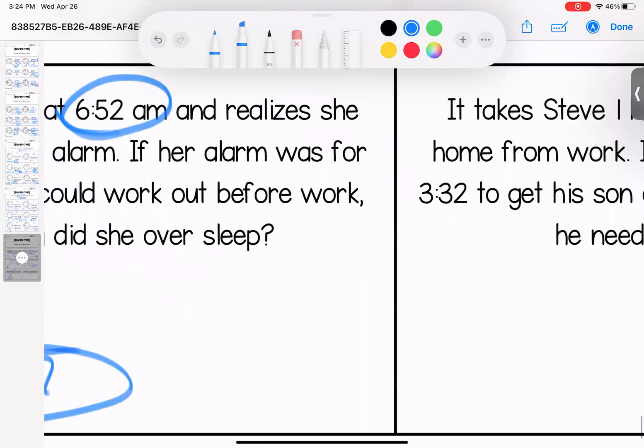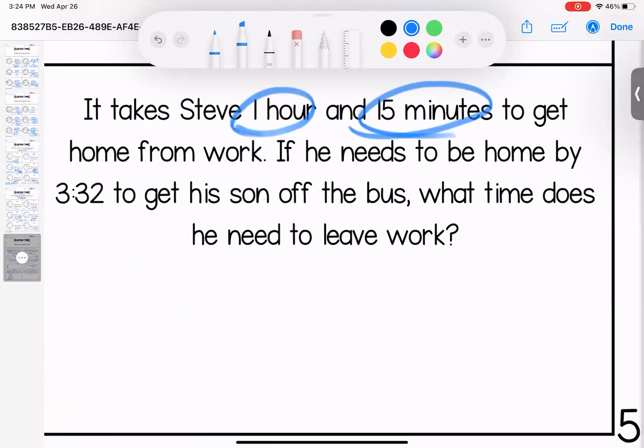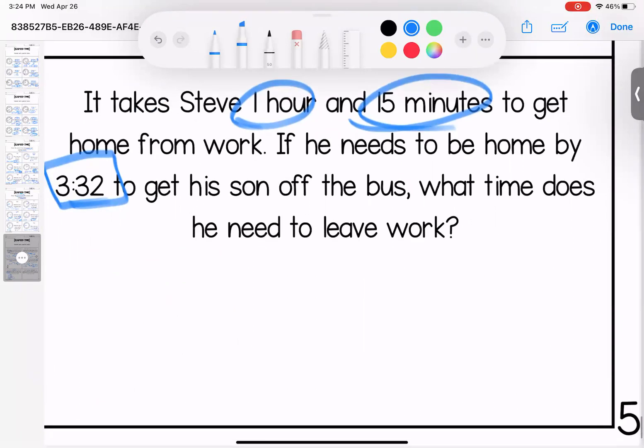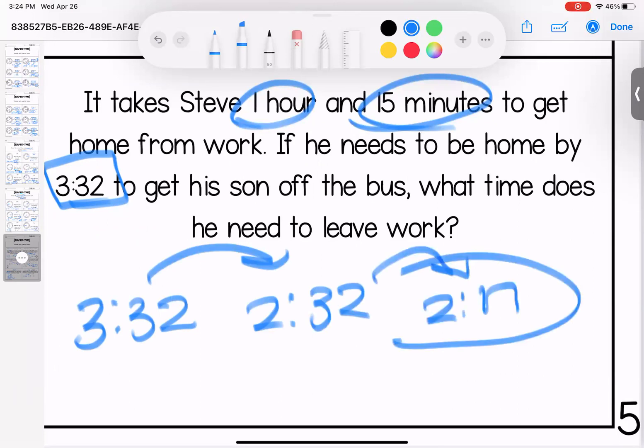Last one. It takes Steve one hour and 15 minutes to get home from work. If he needs to be home by 3:32 to get his son off the bus, what time does he need to leave work? So if he starts at 3:32 and we work backwards one hour and 15 minutes, 2:32. 15 minutes would be 2:17. All right loves, sorry about the technical difficulties on this last page. If you have questions, bring them with you to class. Have a good one.